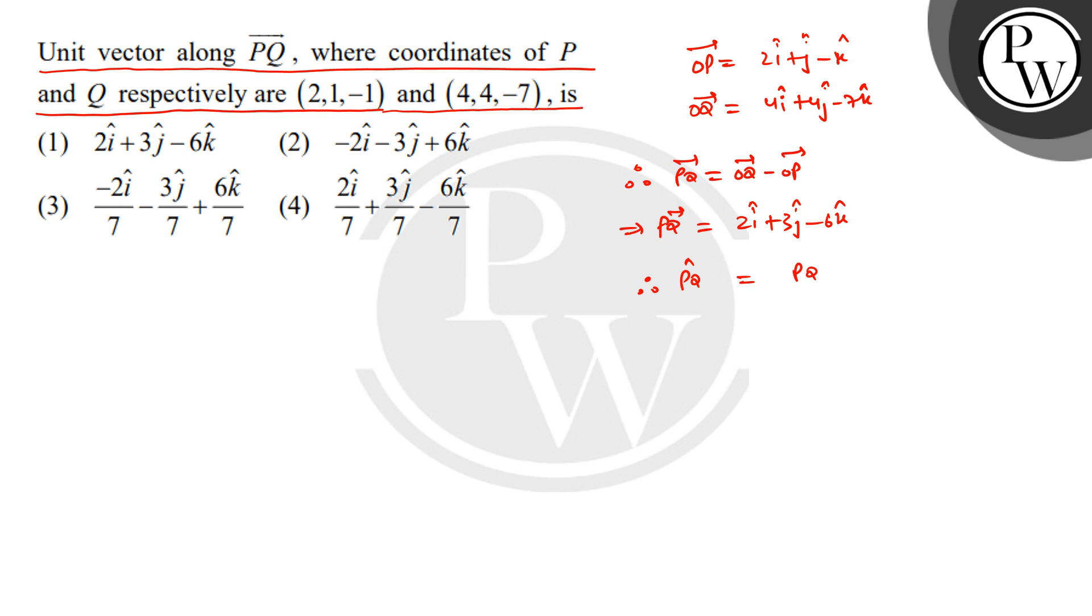Now the magnitude of PQ vector will be equal to square root of (2 squared is 4, 3 squared is 9, 6 squared is 36), which equals square root of 49, so that will be equal to 7.